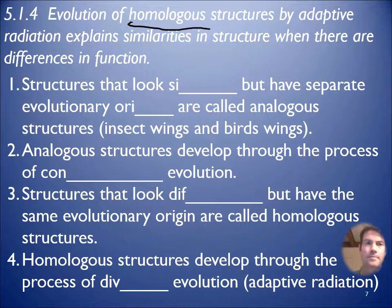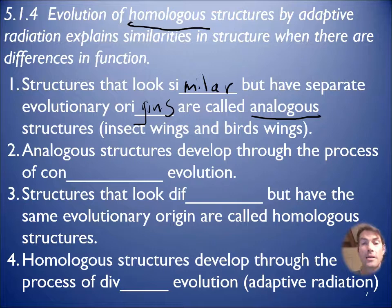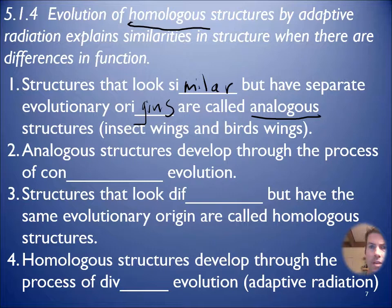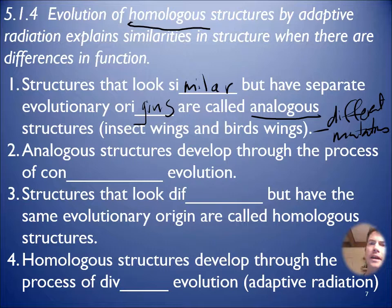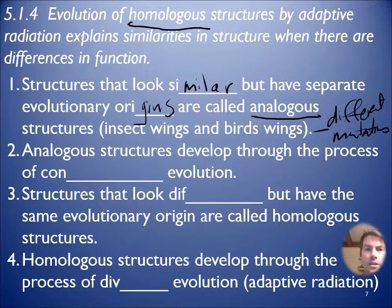So important concepts here - homologous structures. Structures that look similar but have separate evolutionary origins are called analogous structures. The best example would be insect wings and bird wings. They function in a similar fashion, but they evolved separately through separate mutations. Different mutations led to those appendages that eventually grew into those different structures.